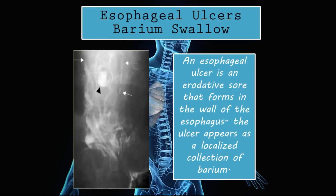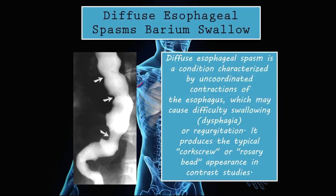Esophageal ulcers on barium swallow. An esophageal ulcer is an erosive sore that forms in the wall of the esophagus. The ulcer appears as a localized collection of barium. This barium swallow x-ray is of a patient who suffers with esophagitis due to chronic reflux, which is one of the major causes of esophageal ulcers. The barium not sticking well indicates inflammation. Pointed out with the black arrowhead, there is a localized collection of barium — that is what an esophageal ulcer looks like. Whenever you see a circular collection of barium, that should signal an esophageal ulcer.